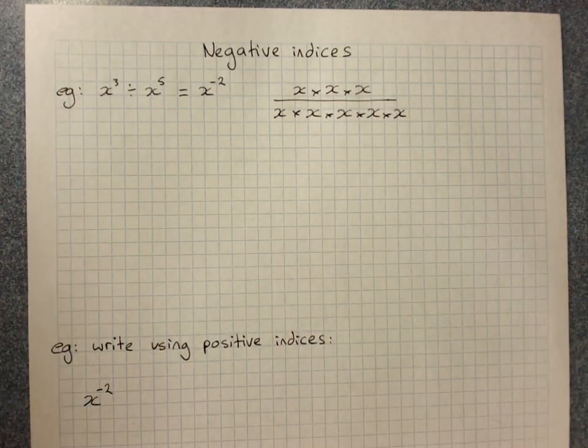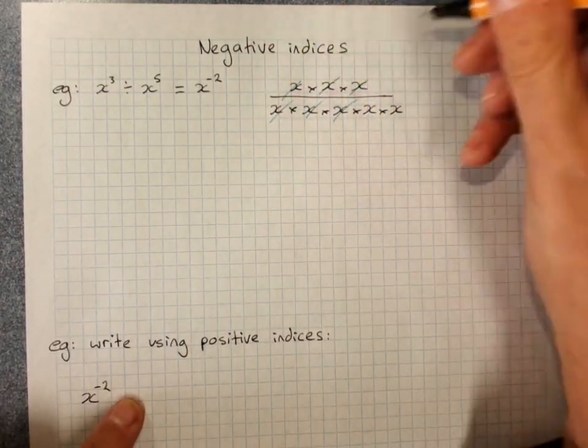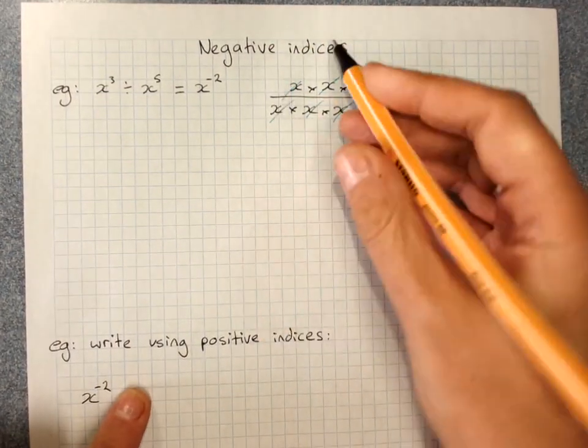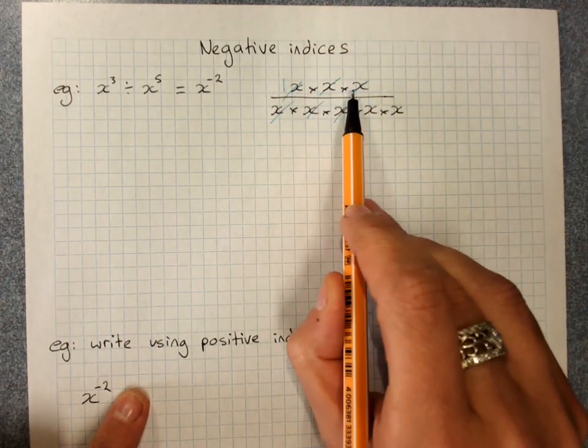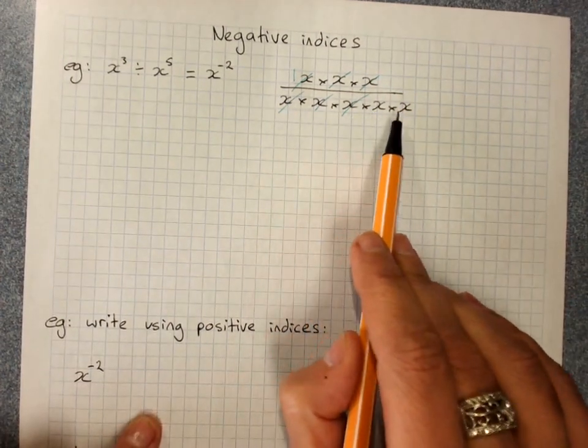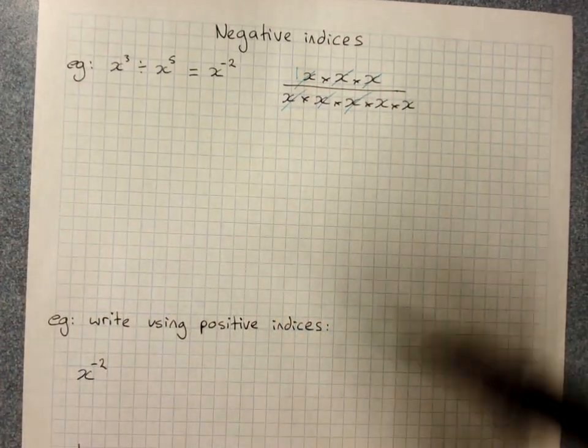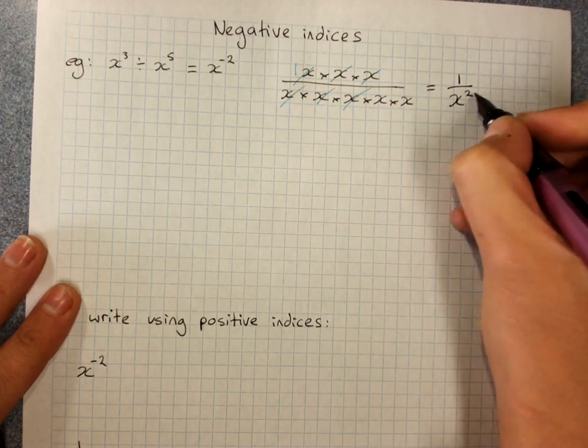And if I then cancel any common factors, dividing x by itself would leave me with 1 up the top. This is 1 times 1 times 1, which is 1. This is 1 times 1 times 1 times x times x, which leaves me with 1 over x squared.